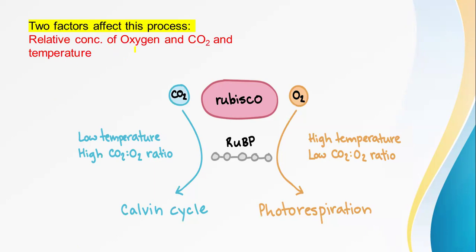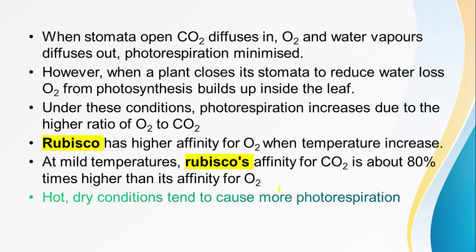There are two key factors: one is the relative concentration of oxygen and carbon dioxide. In C3 plants, when there is a lot of carbon dioxide available, carbon dioxide will be preferentially fixed. When stomata are open, carbon dioxide enters and water vapors diffuse out, so photorespiration is minimized.